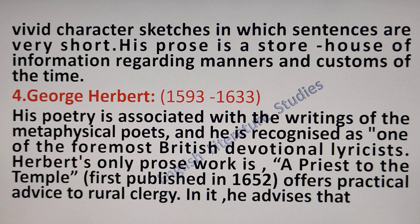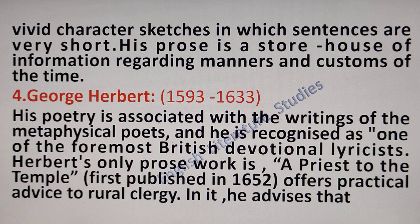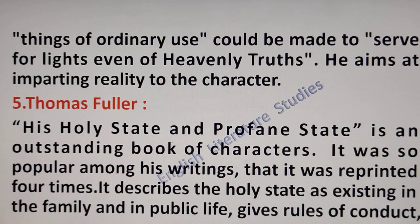The fourth character writer is George Herbert. George Herbert's poetry is associated with the writings of the metaphysical poets, and he is also recognized as one of the foremost British devotional lyricists. George Herbert's only prose work is A Priest to the Temple, which was first published in 1652. This work offers practical advice to rural clergy. In it, he advises that things of ordinary use could be made to serve for lights even of homilies. He aims at imparting reality to the character.